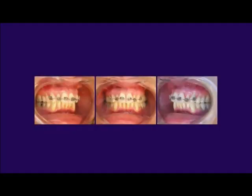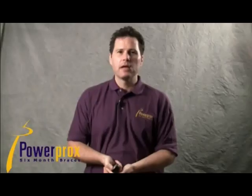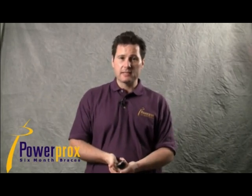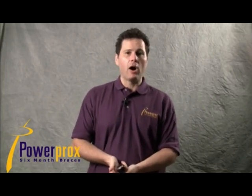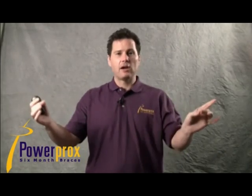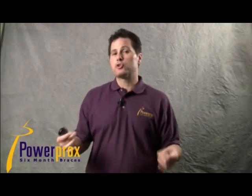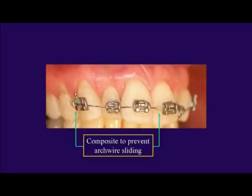Here's a case where we treated this patient from canine to canine on the upper arch. The goal was to correct a lateral incisor and some overall alignment issues. Whenever I'm treating a case segmentally, I always add some flowable composite on the arch wire right at the midline and also right on the end wires where it's protruding past the canine. This helps prevent the arch wire from sliding around and sliding out of the bracket slots, since there are fewer brackets tying it in.